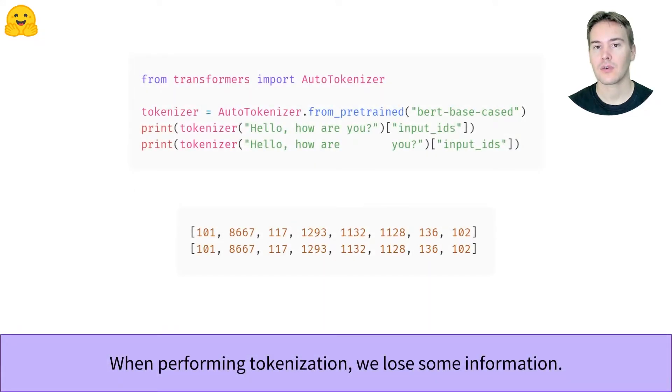First, let's have a look at the usual output of a tokenizer. We get input IDs that correspond to tokens, but we lose a lot of information in the process.